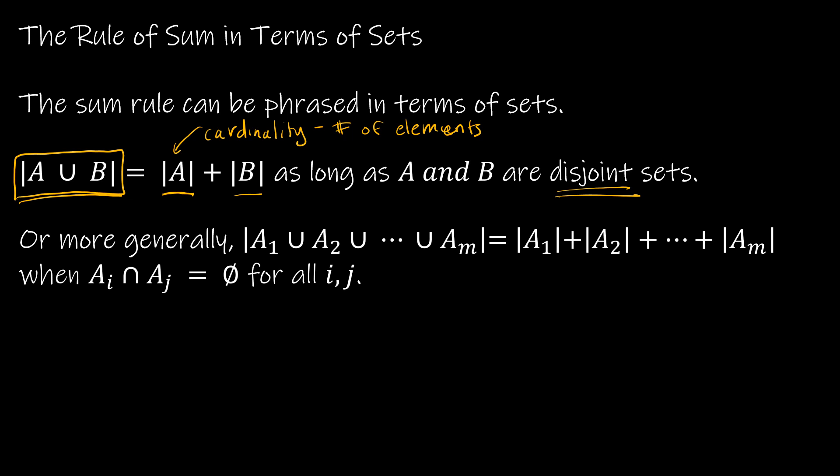So when we continue learning about the rule of sum for more complex problems, we will talk about what happens when those sets are not disjoint. But for now, we're just dealing with disjoint sets. So again, what we're looking at more generally, we're not going to have just two sets, we're going to maybe have quite a few, is the union of all of those sets is equal to the cardinality of each of the sets that we're adding together when all of those sets are disjoint. So again, this is saying the intersection of the sets is equal to the empty set, which means there are no elements shared in any of the sets.